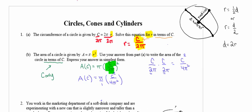Squaring c over 2π means multiplying it by itself: the numerator gives c squared, the denominator gives 4π squared. I'll simplify before multiplying — a factor of π in the numerator cancels with one π from the denominator — leaving c squared over 4π. So in terms of circumference, the area of the circle equals c squared divided by 4π, and the only variable on the right side is c.